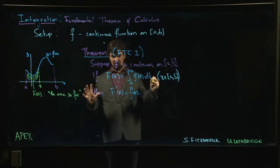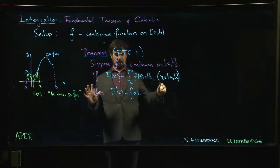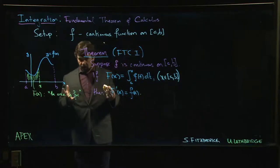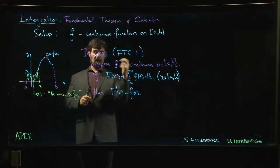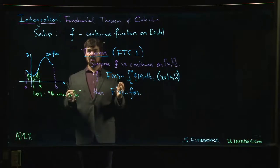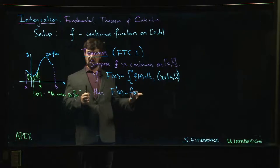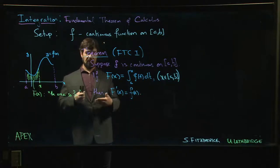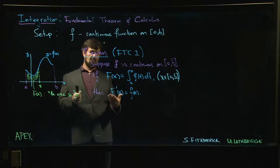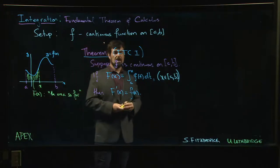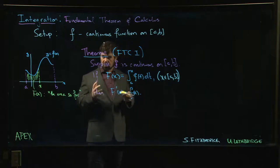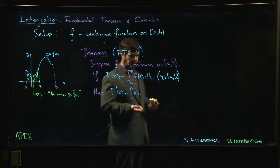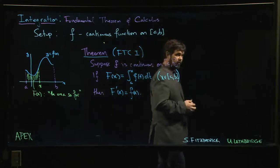This is an important result because it tells you that every continuous function has an anti-derivative, even if you can't find it or write it down by other means. You can define it as an integral. We'll see examples of functions where you can't come up with an anti-derivative in terms of trig functions, exponentials, polynomials, or logarithms — where the only way to express it is through the first part of the fundamental theorem.